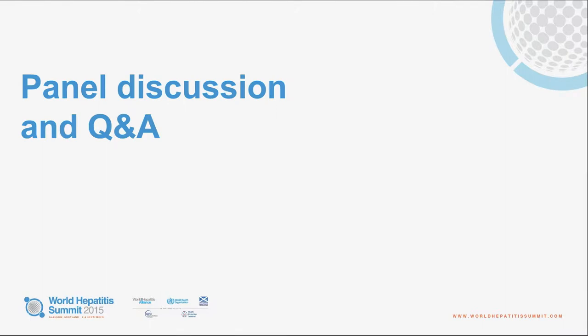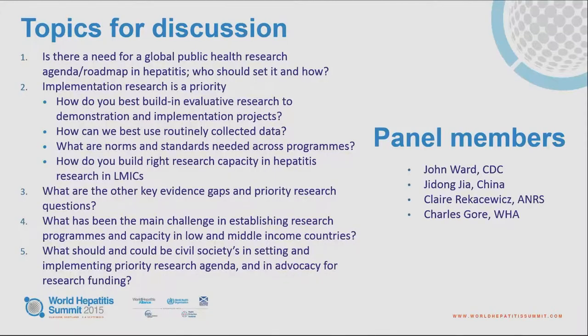I'm going to start with the same question to several of the panel members — question number one and three. We're going to leave the implementation research one for the general discussion with the audience. Is there a need for a more formalized approach to setting a global public health research agenda and a roadmap, a priority-setting process? And if so, who should set it and how should it be set? And then, what do you see as the other key evidence gaps and public health research priorities?